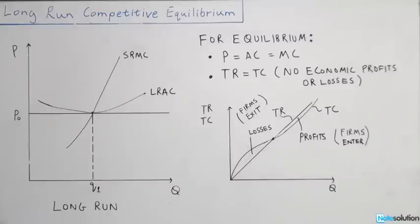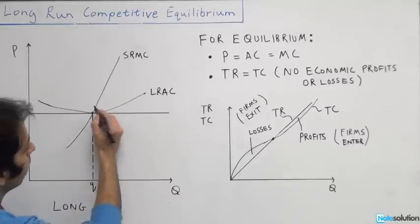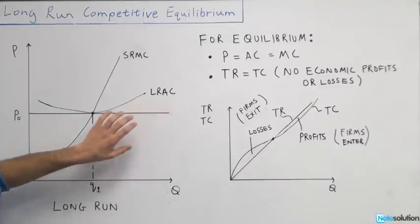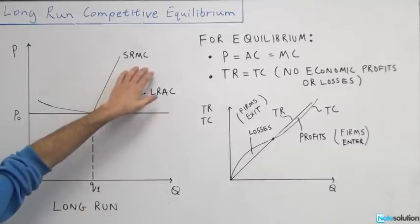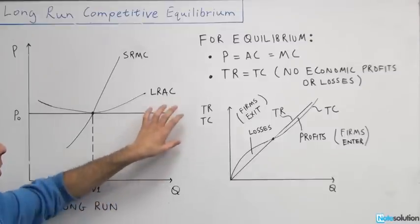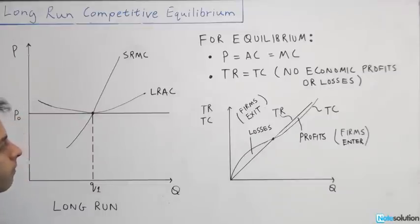In the long run, the price at equilibrium is equal to the long-run average cost, which is also equal to the short-term marginal cost. What that is saying is basically the price you're getting in the long run should cover your costs on average, so that you're not experiencing losses or profits — you're in the equilibrium condition where price equals average cost.